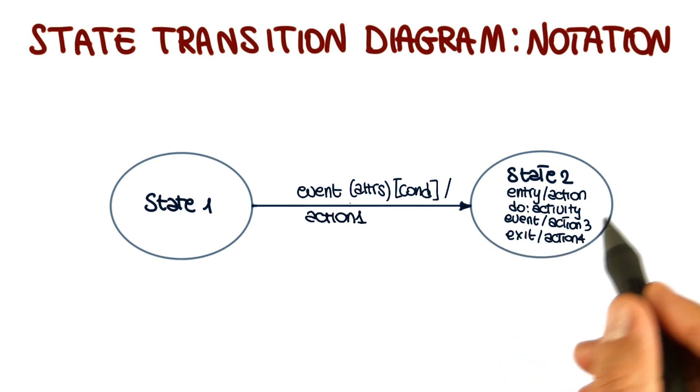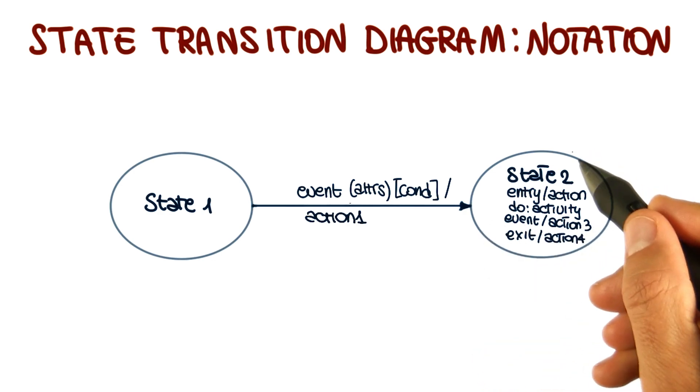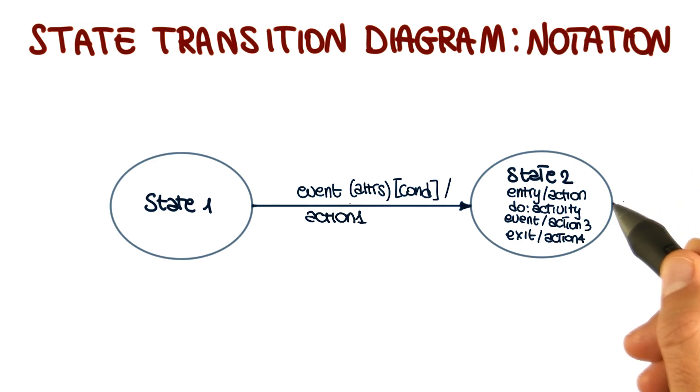And in this case, this notation is basically a shortcut for an event that will cause a state transition that will bring the object back into the same state.